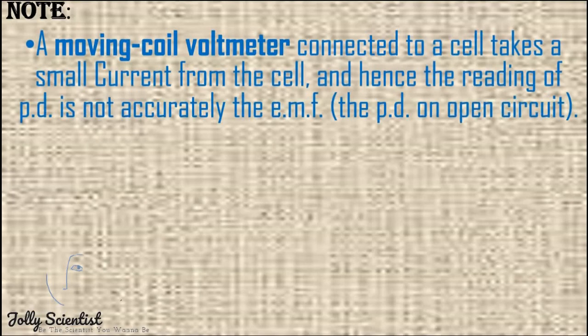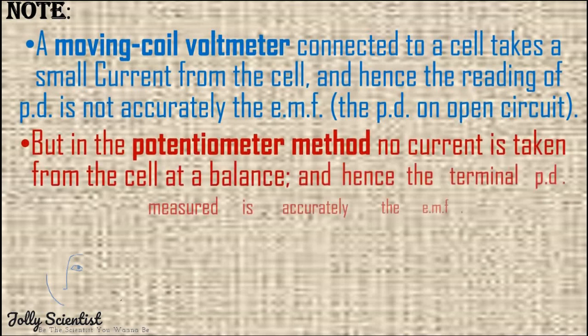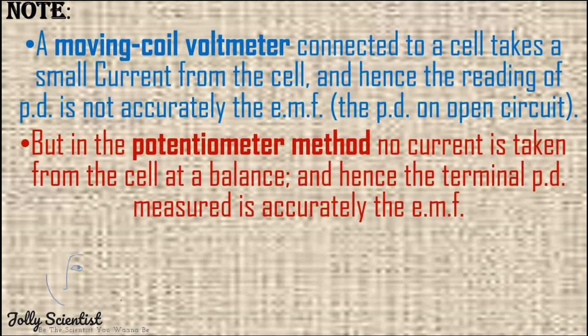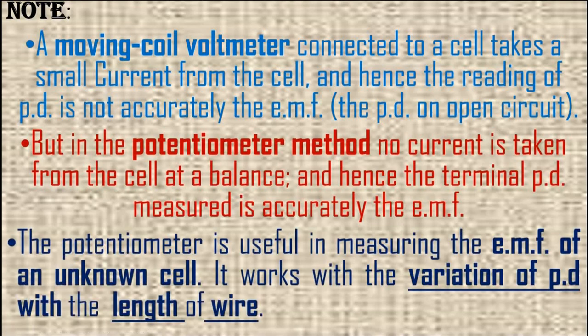Since resistance is proportional to length, we have E1 divided by E2 equals L1 divided by L2. Note that a moving-coil voltmeter connected to a cell takes a small current from the cell, so its reading of potential difference is not accurately the EMF. In the potentiometer method, no current is taken from the cell at the balance point, and hence the terminal potential difference measured is accurate — equal to the EMF.